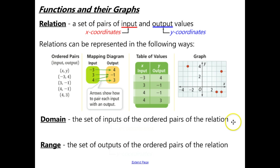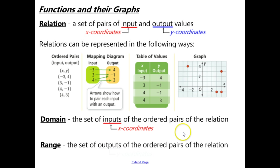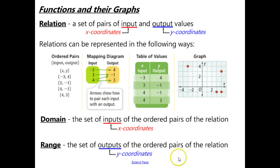The domain refers to the set of inputs of the ordered pairs of the relation — that is, all the x-coordinates represented. The range is the set of outputs, representing all of the y-coordinates in the relation.